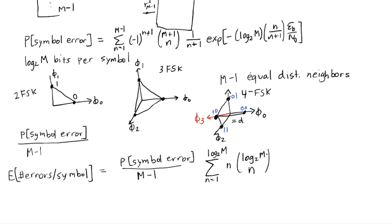That's because for one error, there's log base 2 M choose 1 way to make that error. For two errors, there are log base 2 of M choose 2 ways to make that error. 2 choose 1 is 2. 2 choose 2 is 1. So this matches with our intuition for 4FSK. For each of these situations, the probability of that symbol being an error is this.